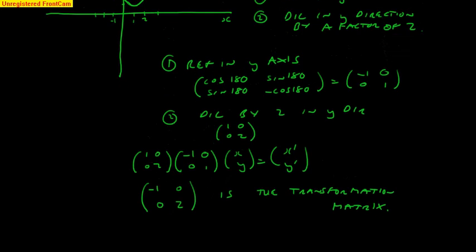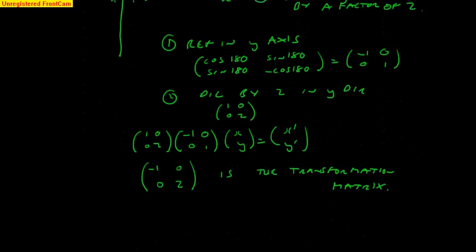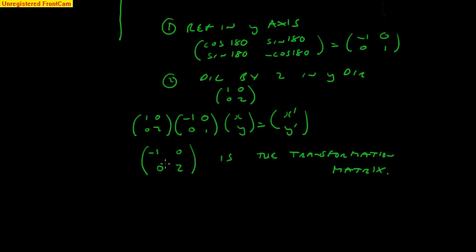So geometrically, what's happening is we are reflecting in the y-axis and then dilating by a factor of 2, and that's describing the transformation in words geometrically, and then we have the same thing. I've just turned that into a matrix, and that is the transformation matrix that does that. And there we go. That's that part, three is the same thing.